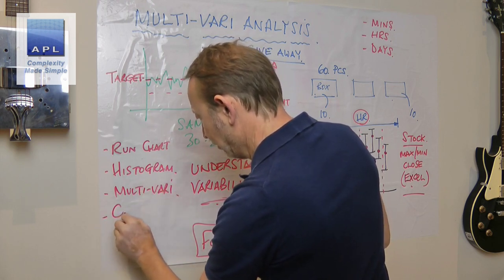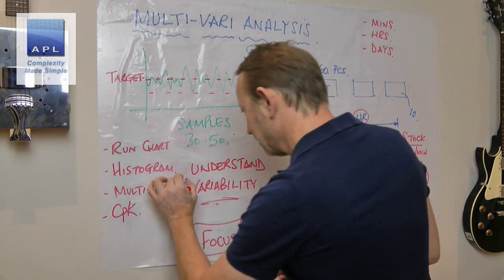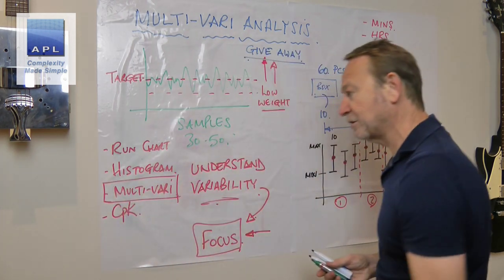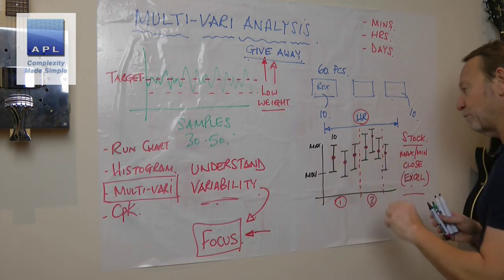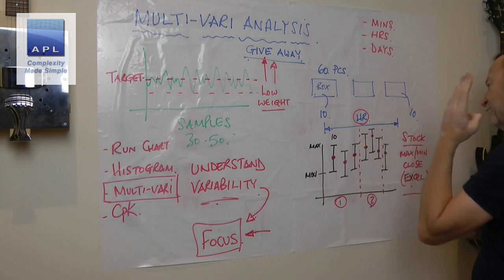I might also want to do a CPK diagram. So you can see I'm using four diagrams. But this one in particular, the multivari chart, the idea of within-group variability, between-group variability, and between-day variability helps you to understand your process at a much deeper level.